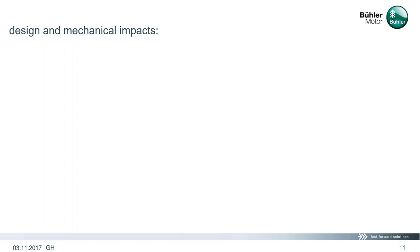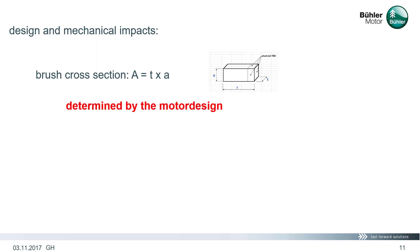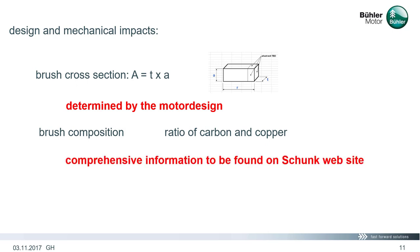At first, we look at the design and mechanical impacts. The brush cross section A, which is width T multiplied by the brush height A, is determined by the motor design. The selection of brush composition, mainly defined by the ratio of carbon and copper, is something that can be done using experience from former life tests or expertise from the brush manufacturers like the company Schunk. They show comprehensive information on their website too.